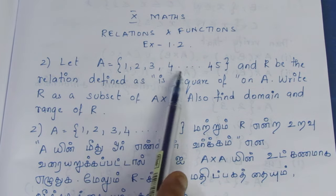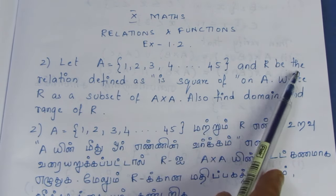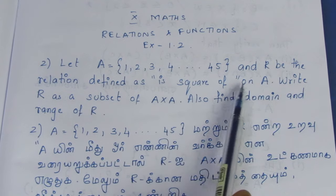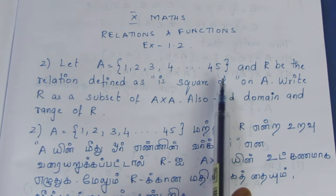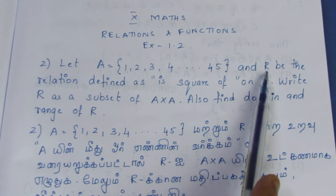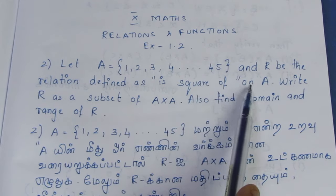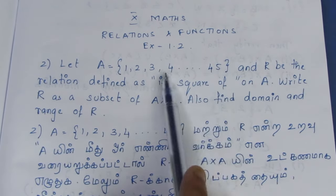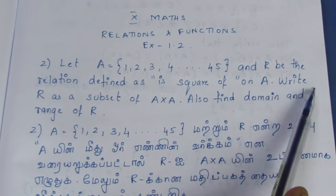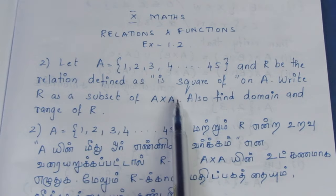A is equal to 1, 2, 3, 4, up to 45, and R is the relation defined as the square on A. So R is the relation in numbers of squares. We need to write R as a subset of A cross A.